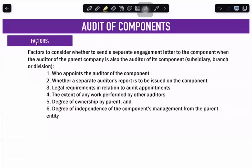Next is audit of components — when the entity has different components, subsidiaries, or branches. The following factors are considered for whether to send a separate engagement letter to the component when the auditor of the parent company is also the auditor of its component: first, who appoints the auditor of the component? If different persons appoint the auditor for the parent and the subsidiary, then you need to provide separate engagement letters.